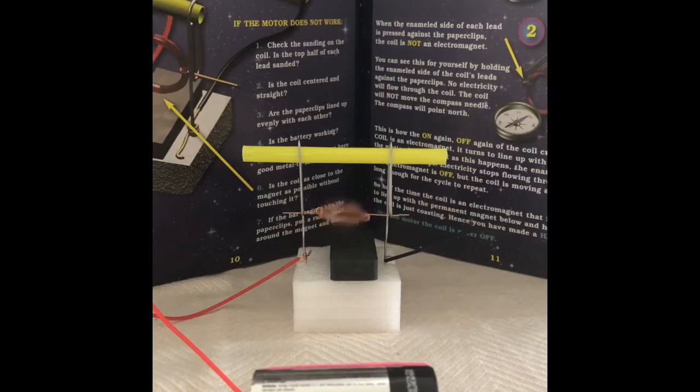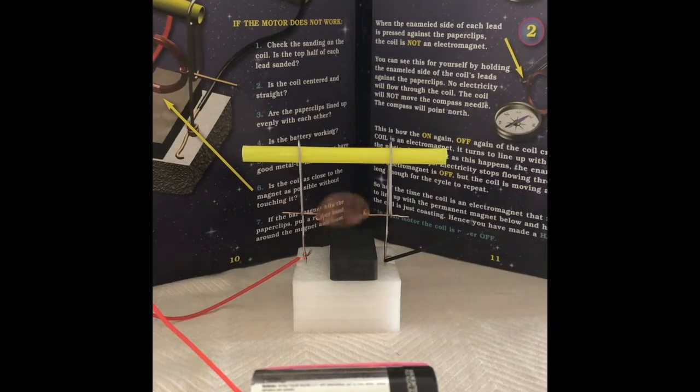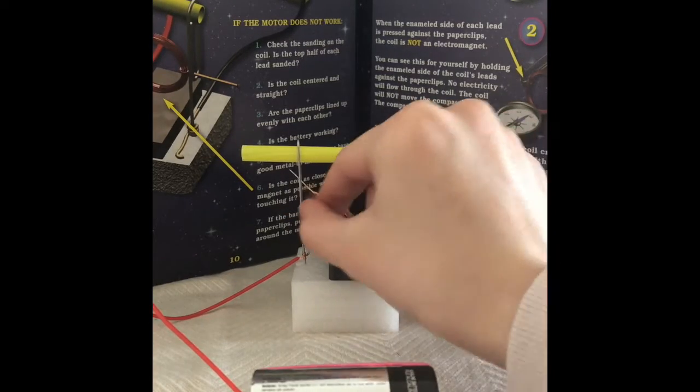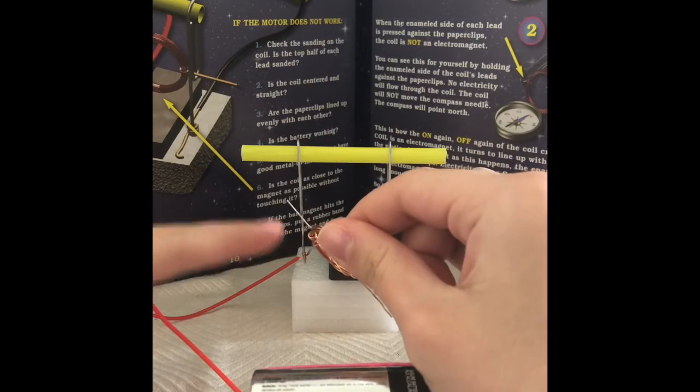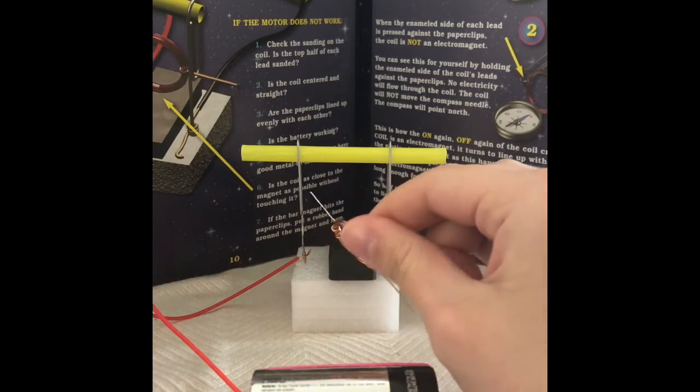Now to explain why the coil is actually moving. So this coil is actually sanded. And when I say sanded, I mean I took a piece of sandpaper and scraped off the enamel, that's why it looks silver.